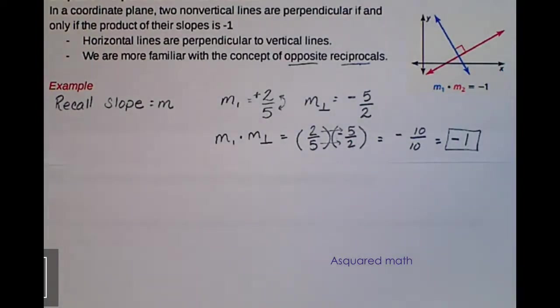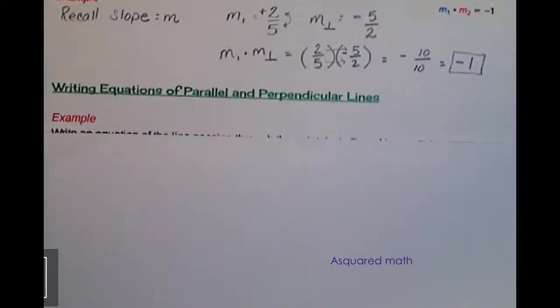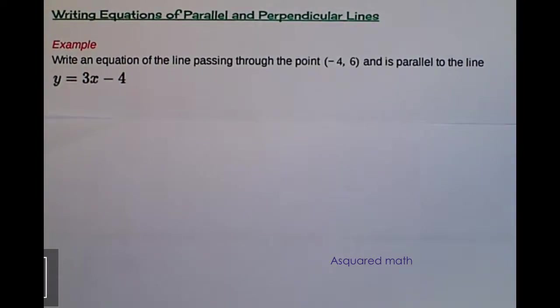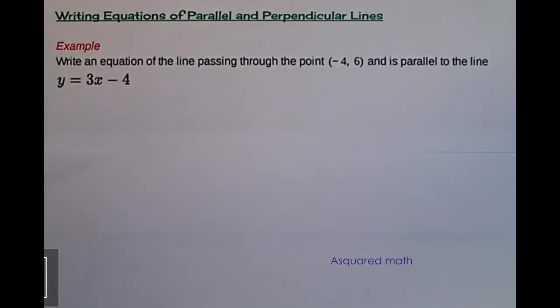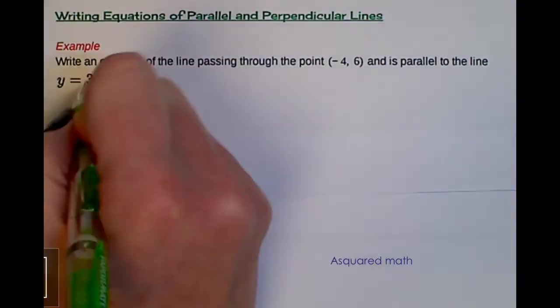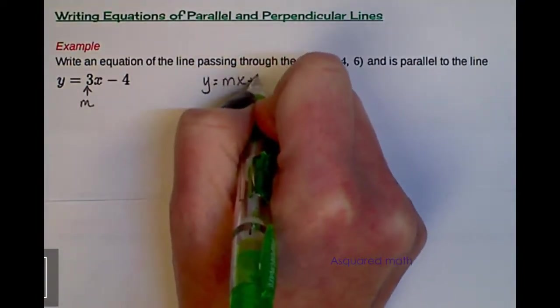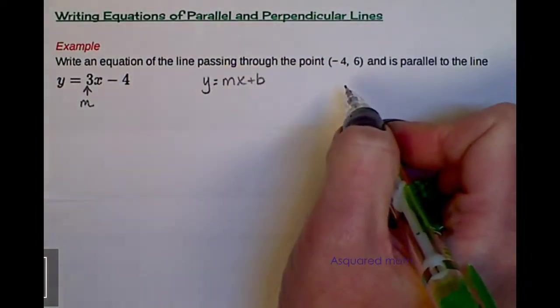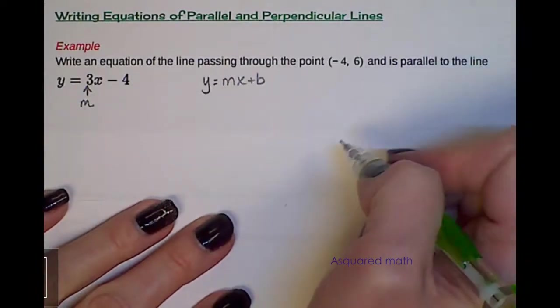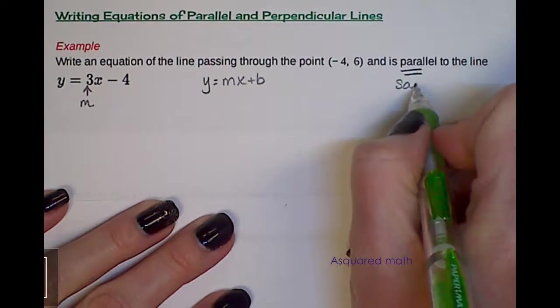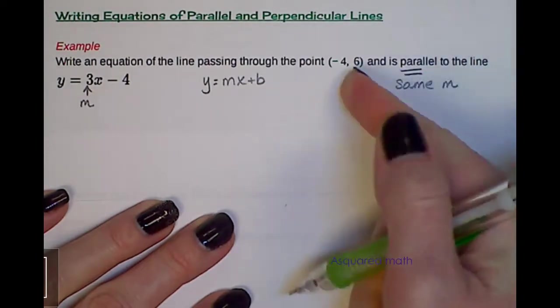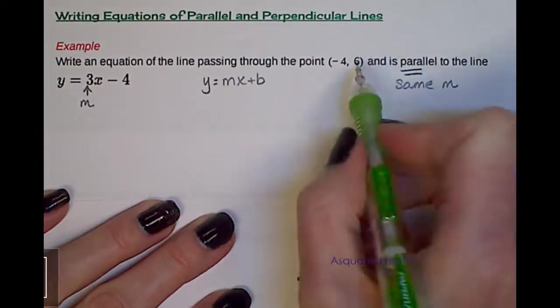The next thing that we're going to review for you is writing equations for parallel and perpendicular lines. The first example we're going to work with is write an equation of the line passing through the point negative 4, 6, and is parallel to this given line of y equals 3x minus 4. So we know 3 is our slope, and we are in the form already of y equals mx plus b. If we were not in that form, we want to rearrange it so we get into that slope intercept form.